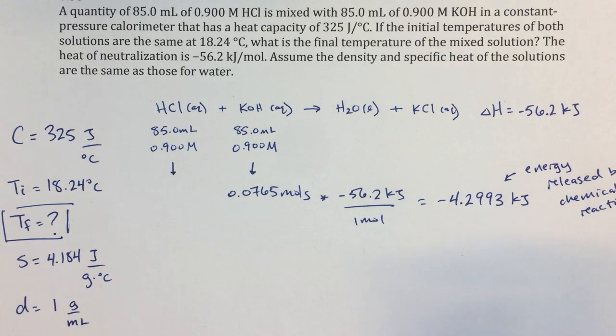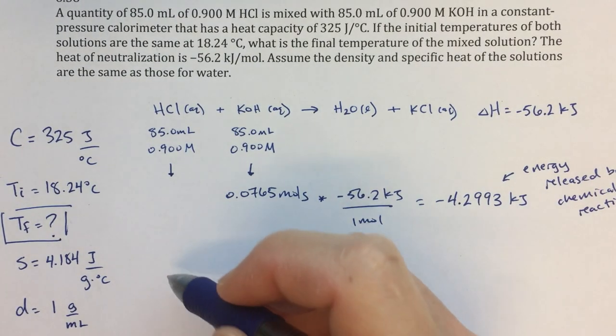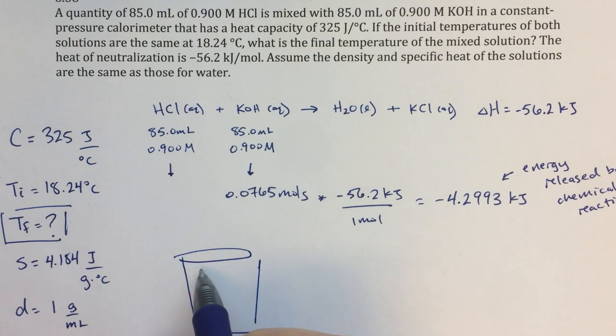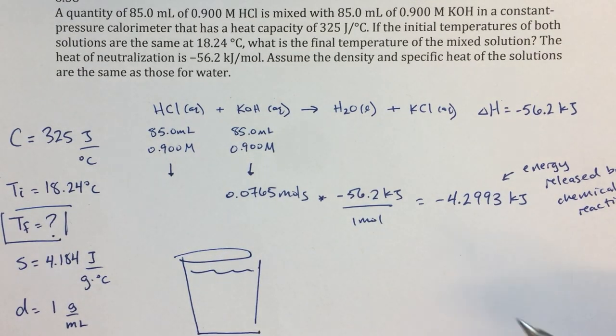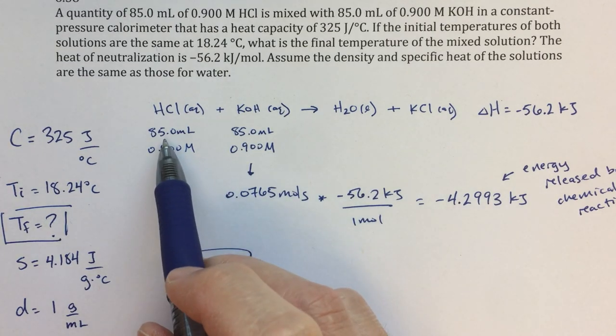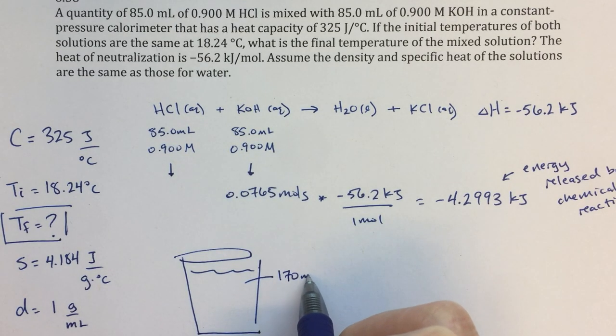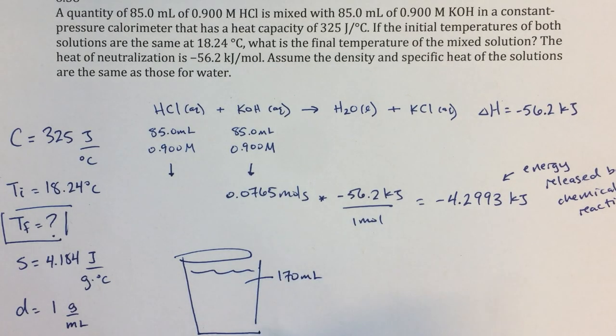And that amount of energy, it's going to be then applied to the calorimeter and the actual water solutions that those solutions make up. So if I draw a little picture here, this is going to be my calorimeter with my solution. I'm going to have 85 plus 85 milliliters. So I'm going to have 170 milliliters total. I've mixed my two solutions together in there.